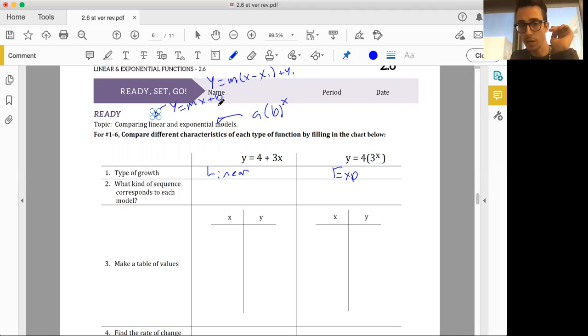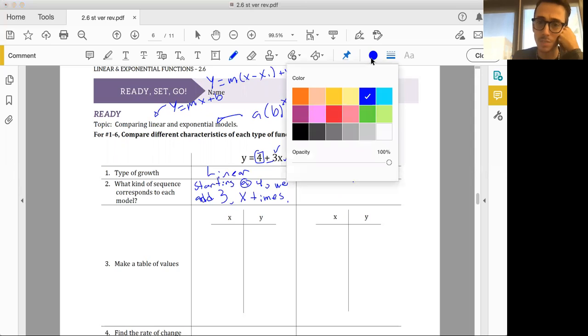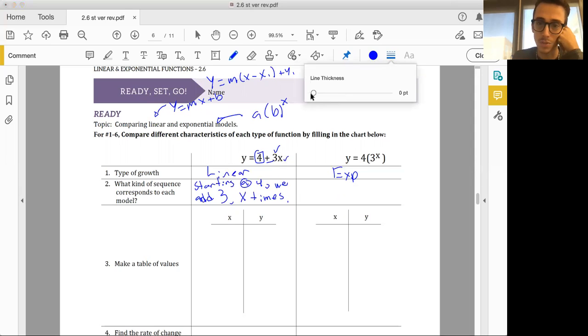So what's up with this? Type of growth: this is linear for sure, this is exponential for sure, because it's mapped out similar to what I wrote here. What kind of sequence corresponds to each model? Well, this looks as if it keeps adding 3. I like that. We can say something even better. So this is starting at 4. Starting at 4, we add, and I say add because add's right here, we add 3x times. 3 being the one right here, x being from right here.